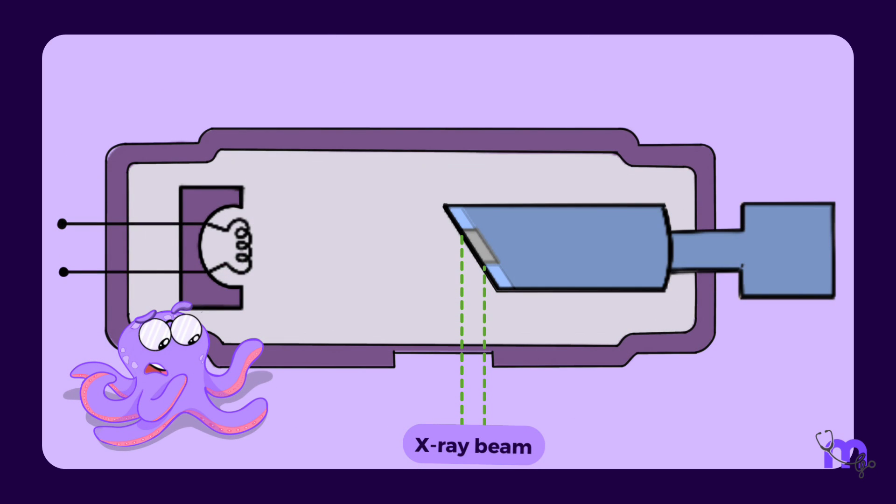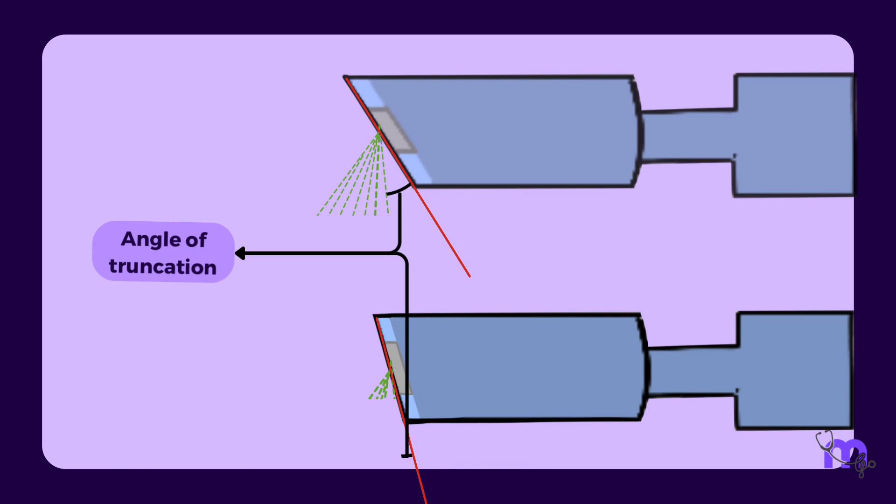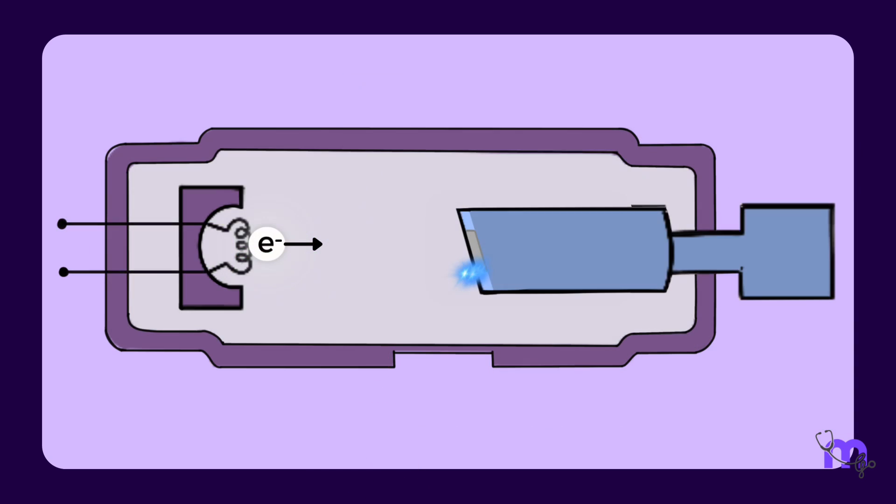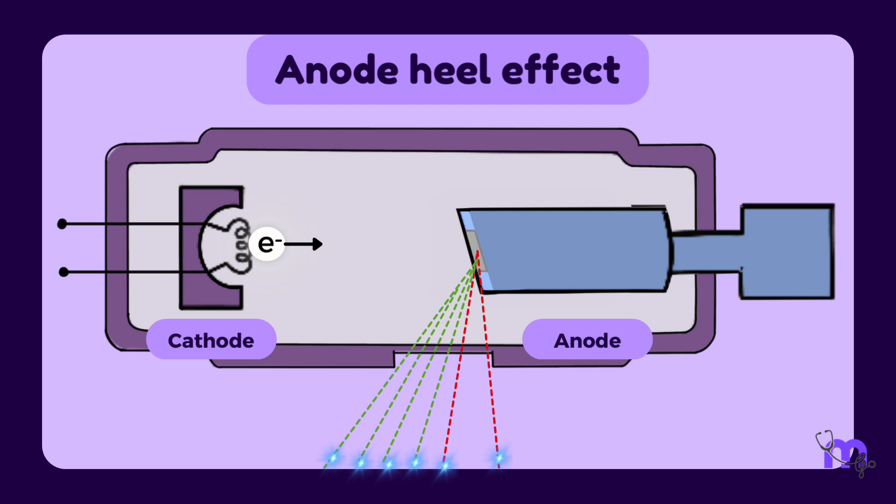An important point to remember at this stage is that there is a limit to how much one can angulate the target to reach the effective focal spot size. Exceeding this will cause a variation in the X-ray beam's intensity across the X-ray field. There will be fewer X-ray photons on the anode side of the beam when compared to the cathode side. This is called the anode heel effect and will be dealt with in detail in another video.